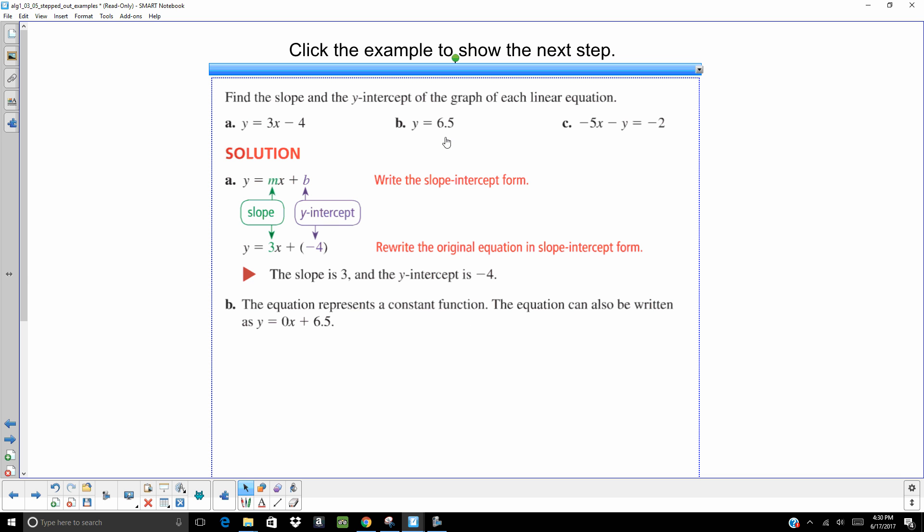On b, if you want to, you can put that 0x in front of it. So the slope is 0 and the y-intercept is 6.5. Putting that 0 in front of it just puts it in that y equals mx plus b. There's no x, so there are 0x's. That's why we can put that 0x in front of it.